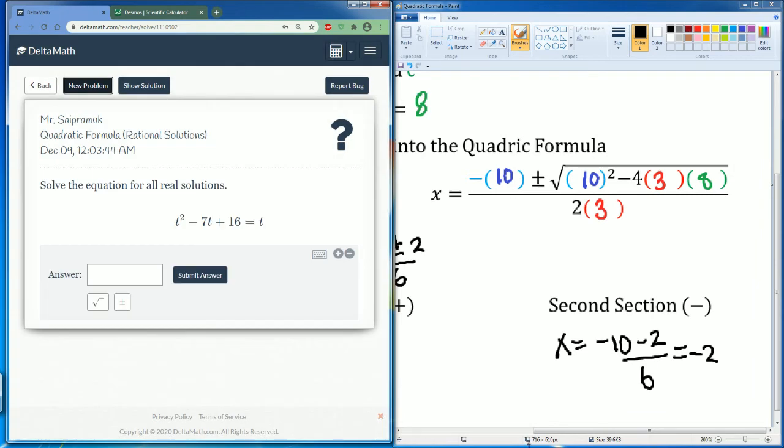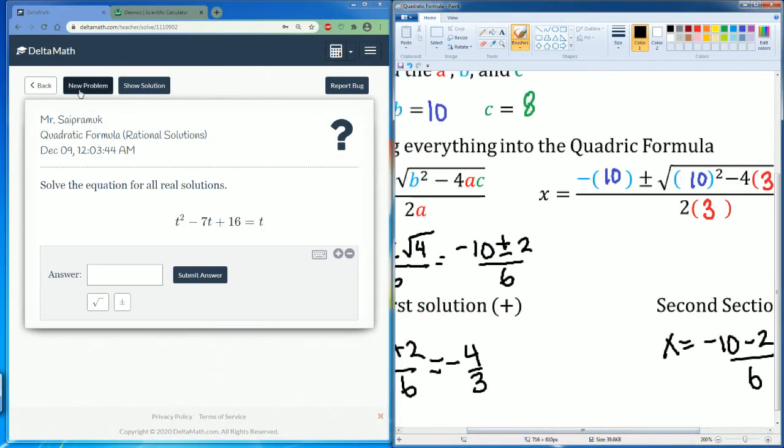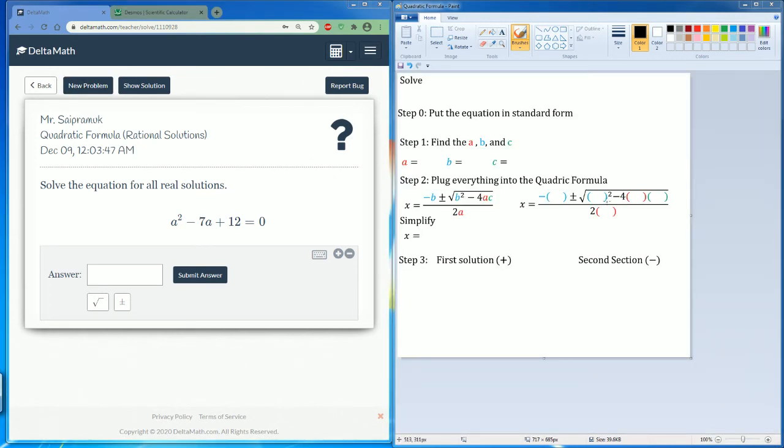Now let's do something like this one. So here, we're going to solve for all the, for this equation, for all real solutions. The equation is a squared minus 7a plus 12 equals to 0.